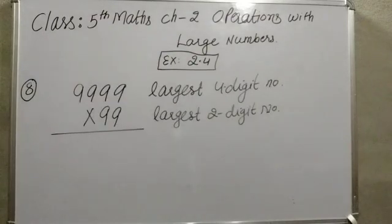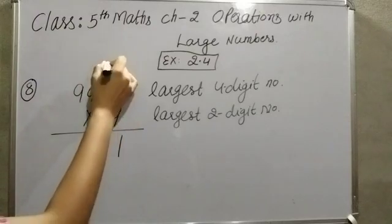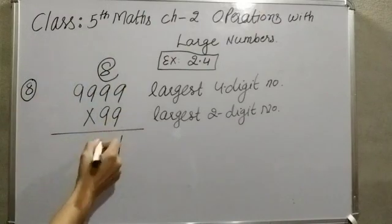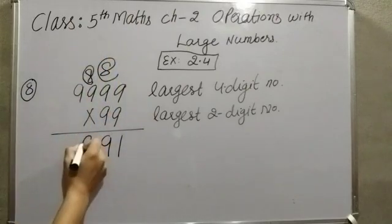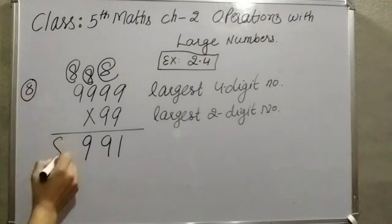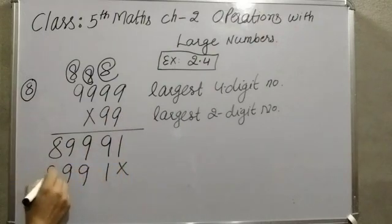The 9th sum asks: find the product of the largest 4-digit number and the largest 2-digit number. The largest 2-digit number is 99 and the largest 4-digit number is 9999. Multiplying these: 9 × 9 = 81, carry 8; again 9 × 9 = 81 plus 8 = 89, carry; this step keeps repeating — 9 here, carry each time — so 9 here again and again with carry.